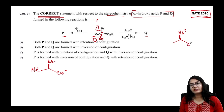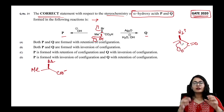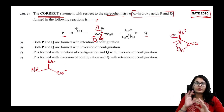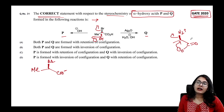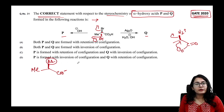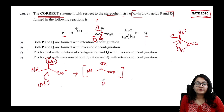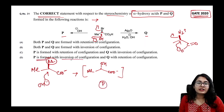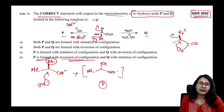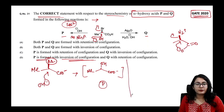Without NGP, OH⁻ simply performs a direct SN2 on the carbon bearing Br, giving P with inversion of configuration. There is no neighboring group participation here — only a straightforward SN2 attack.